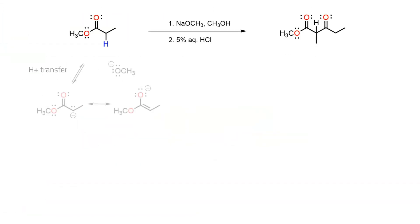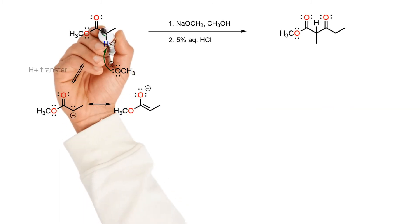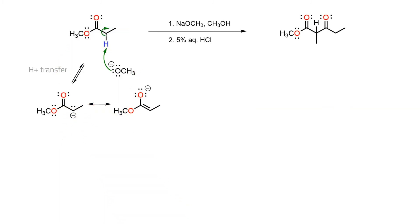In the first step, the ester, which has a pKa of around 25, is deprotonated to set up a low concentration of the resonance-stabilised conjugate base. This is in equilibrium with the starting ester, so both species are present in solution at the same time.